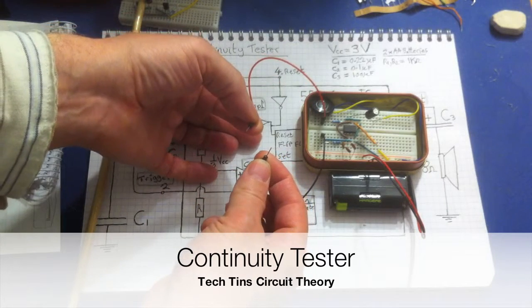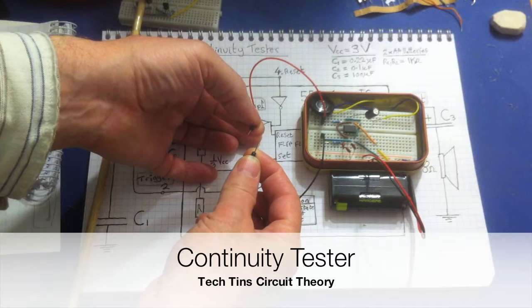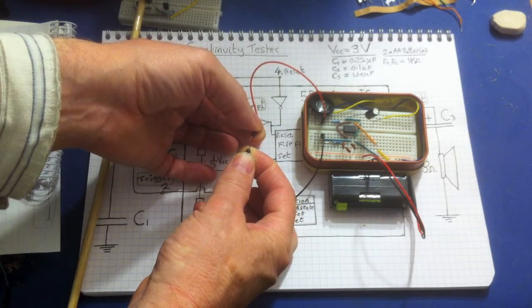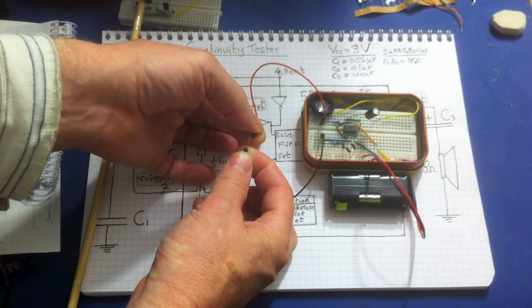So these two leads, they're going to measure if there's any continuity between them. For example, when we short them, then it will buzz.